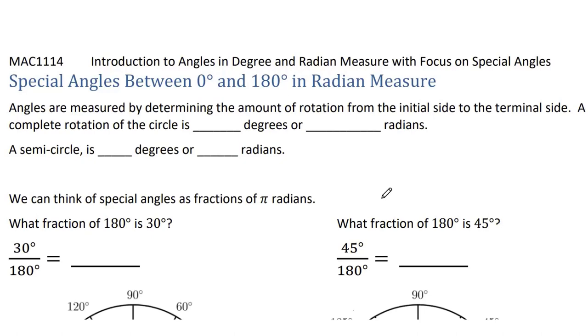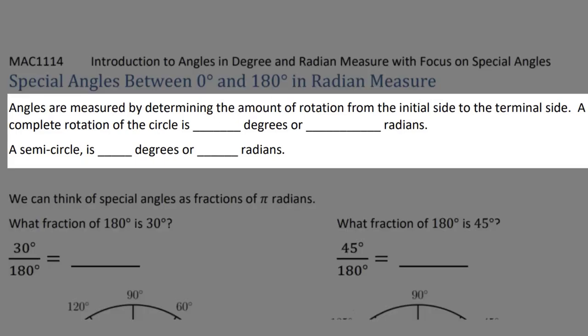Now let's talk about the special angles we talked about before, but in radian measure. Whether we're talking about degrees or radians, it's still the same situation, but we have to get comfortable doing either. Angles are measured by determining the amount of rotation from the initial side to the terminal side. A complete rotation of the circle is considered 360 degrees — that is 2π radians. Remember how we went all the way around the circle? It had to be 6 and a little bit more radii. So 360 degrees is 2π radians.